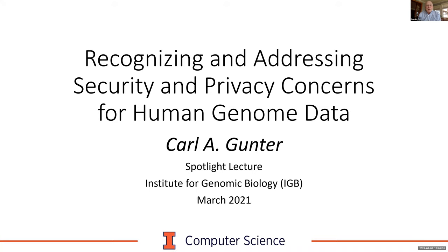Carl is the director of the Illinois Security Lab. He's the founding chair of the security and privacy area in the computer science department, and here in the IGB, Carl leads the genomic security and privacy team. From the perspective of the IGB, I feel quite lucky that Carl is now focusing his considerable expertise in security and privacy on issues of genomic security, where there's lots of need and lots of problems. Carl has assembled a really inspiring interdisciplinary group to address this in the relatively new GSP theme. We'll be hearing about that today in Carl's lecture on recognizing and addressing security and privacy concerns for human genomic data.